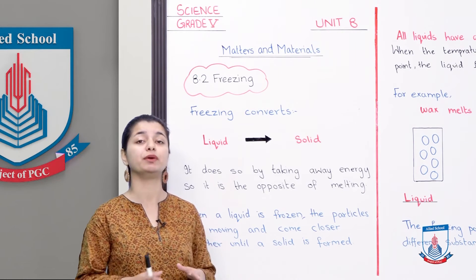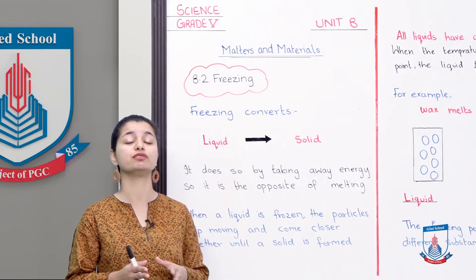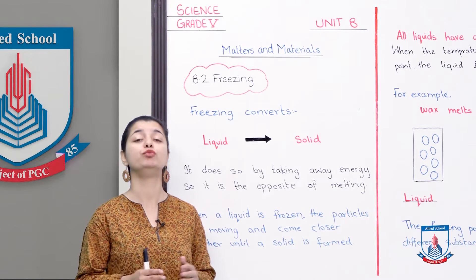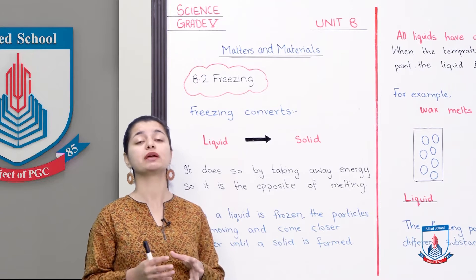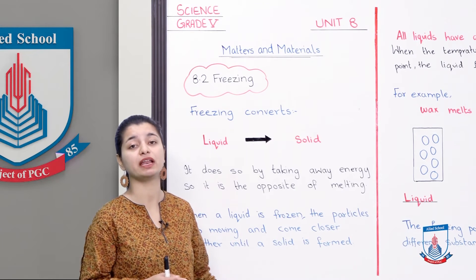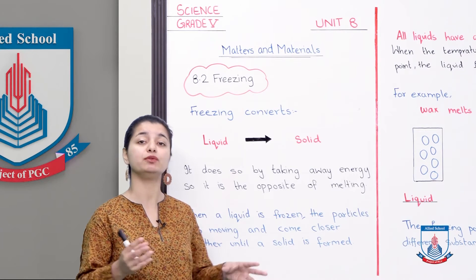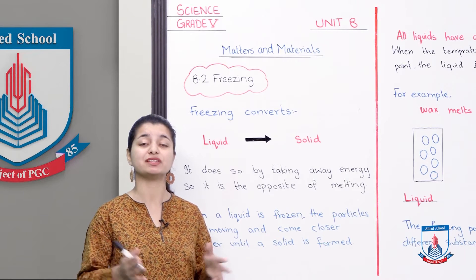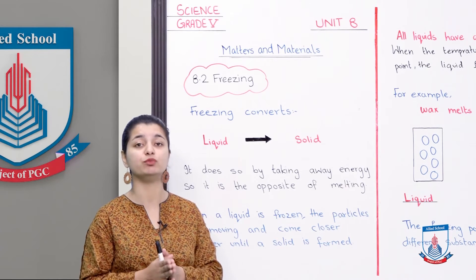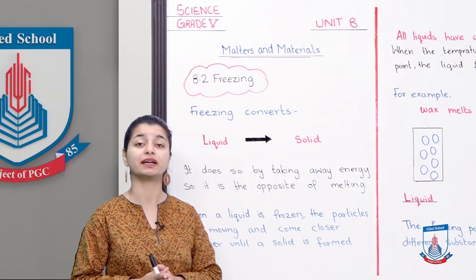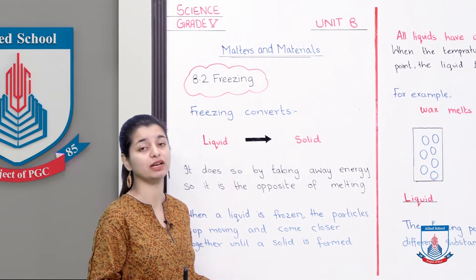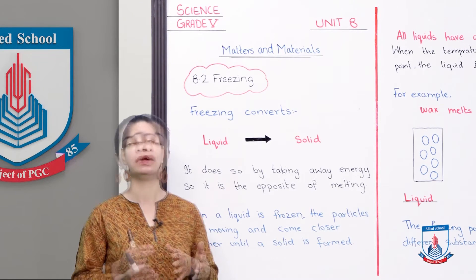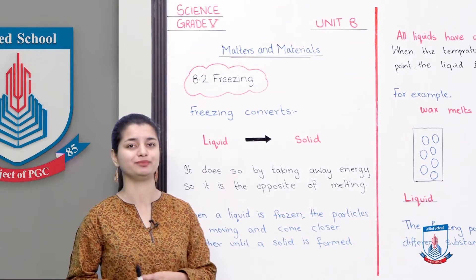So, when you make a liquid cold and cool it down, the particles slow down and move closer together. Until it becomes solid, the particles close in. Once they are all together and movement stops, they become solid. This is the conversion of a liquid to a solid. Let's look a little more at this.